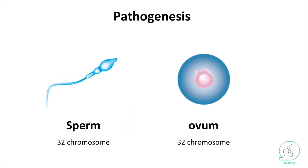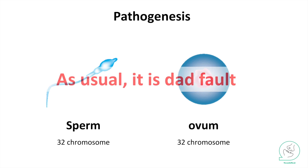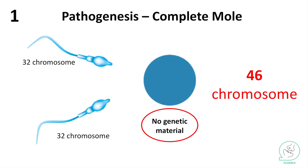First, fertilization. Normally the sperm carries 32 chromosomes and the ovum carries 32 chromosomes as well — we call it haploid. But in GTD, in the complete mole, you end up with 46 chromosomes. How? The ovum is empty and doesn't have any genetic material, and this ovum gets fertilized by either two sperms with 32 chromosomes each, or in most common cases, one sperm with 46 chromosomes.